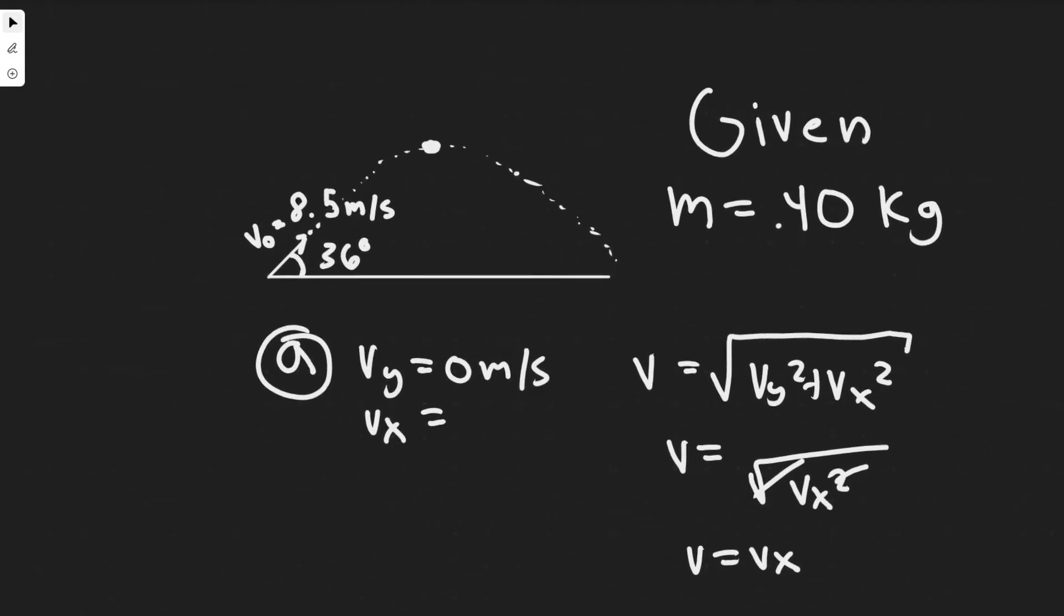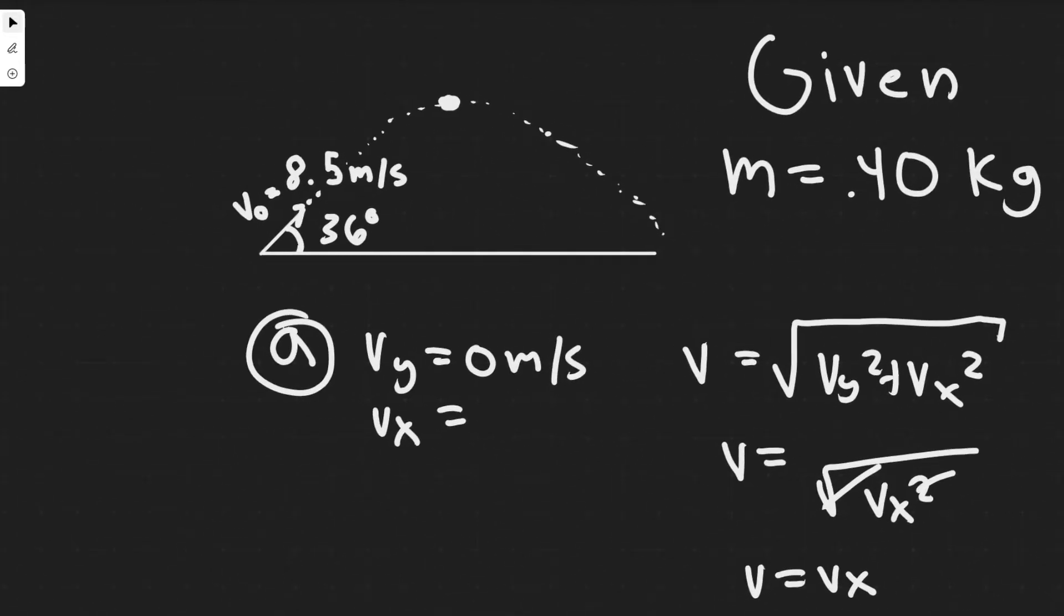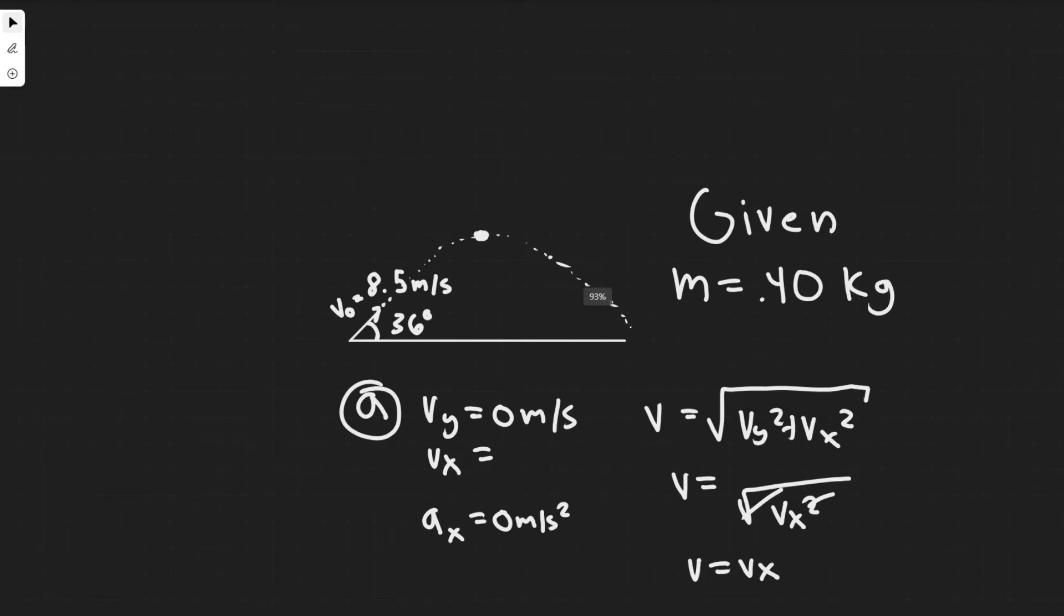What you should notice is in two-dimensional kinematic problems like this, unless specified otherwise, the acceleration in the x is 0 meters per second squared. We only have acceleration in the y as a result of gravity. If acceleration is 0, this means the velocity is constant throughout the entire movement. If it's constant, the velocity here at the point we're trying to find in the x is the same as the velocity initially. So really all we have to do is find the x component of the velocity initially and that's our answer.